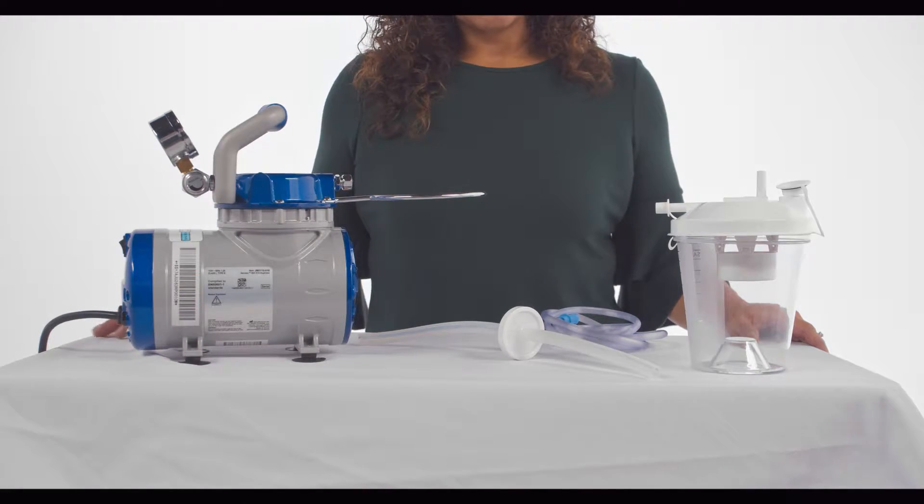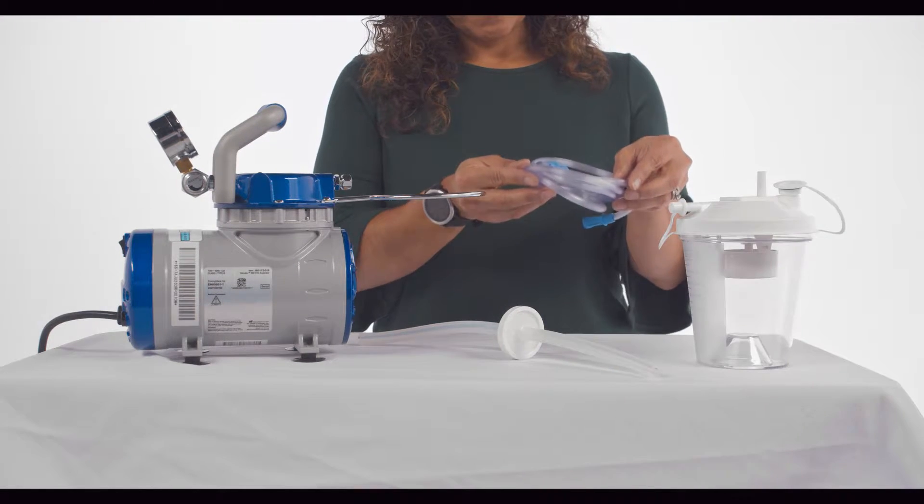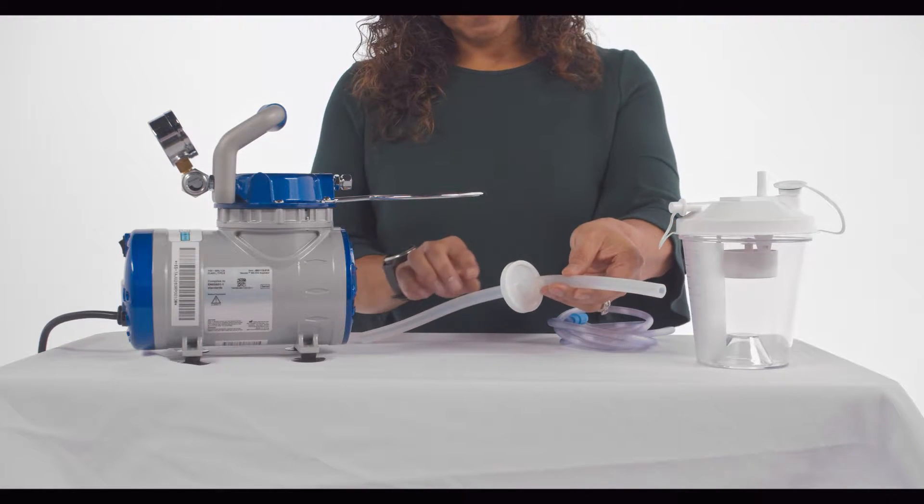With each John Bunn aspirator, you will have the suction machine, collection bottle with top, patient suction tubing, unit tubing, and HEPA filter.